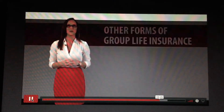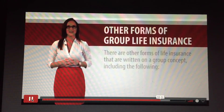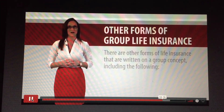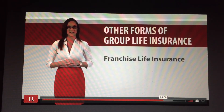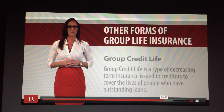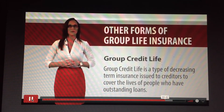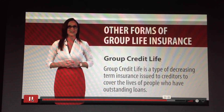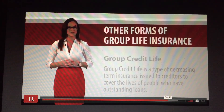Other forms of group life insurance: there are other forms of life insurance written on a group concept, including franchise life insurance and group credit life. Group credit life is decreasing term insurance issued to creditors to cover the lives of people who have outstanding loans.